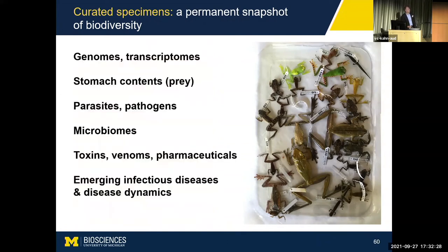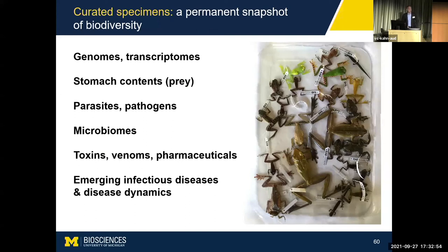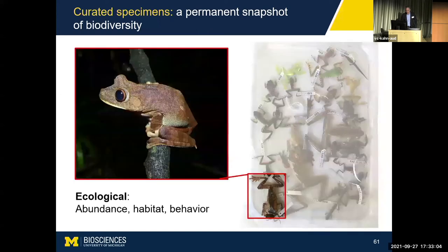Take this tray of dead frogs, for example. This is a time capsule — all of these frogs were captured in the same place on a single steamy Amazonian night. And we're not only taking the frogs; we're taking everything that comes along with them: genomes, transcriptomes, microbiomes, potentially bioactive compounds. These things also provide information about emerging infectious diseases and disease dynamics, perhaps zoonoses like the next COVID-19. We also take information on the ecology of these animals and link it to the specimens — all of this works out to the types of information we need to solve these fundamental biodiversity questions.